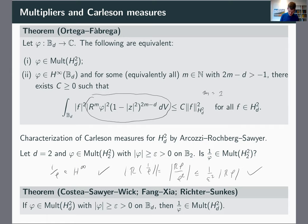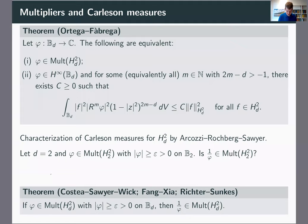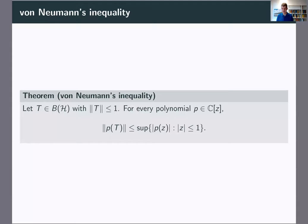Why are these multipliers so important? To explain this, let's switch to operator theory. The motivation comes from classical one-variable operator theory, namely von Neumann's inequality: if T is a contraction operator on Hilbert space and p is a polynomial, then the norm of p(T) is at most the sup norm of p on the unit disk. This is a fundamental result that connects function theory on the disk to operator theory on Hilbert space.